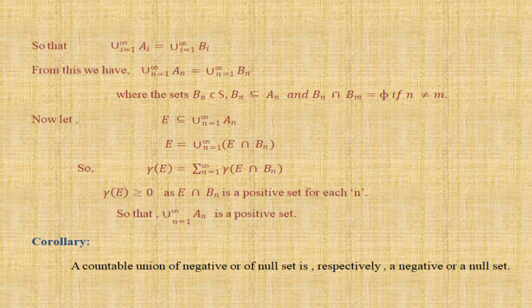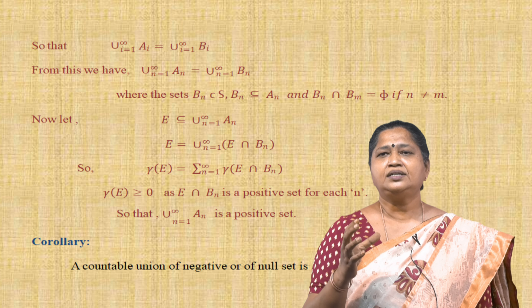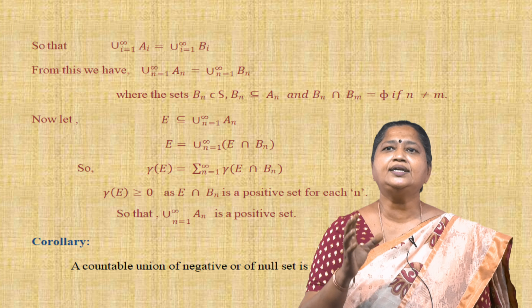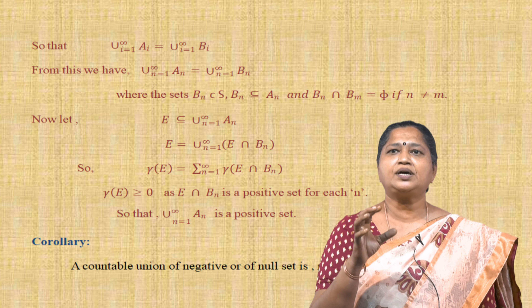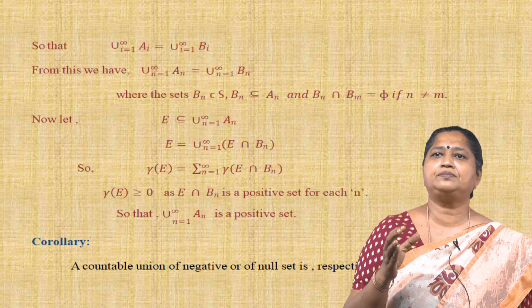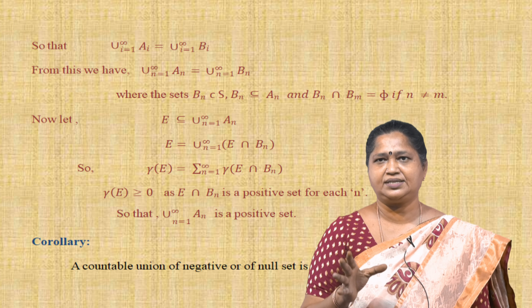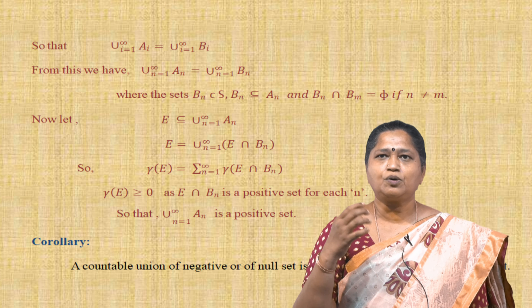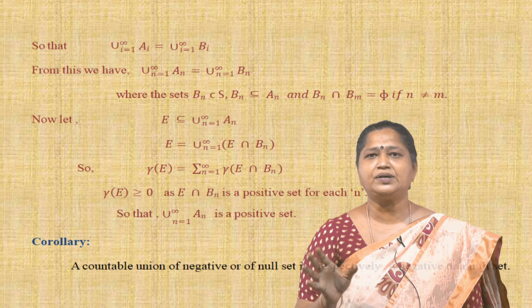ν(E) ≥ 0 because ν(E) = Σ_{n=1}^{∞} ν(E ∩ B_n) and E ∩ B_n is a positive set for each n, so the negative terms are omitted and only positive terms remain. Thus Σ_{n=1}^{∞} ν(E ∩ B_n) is non-negative, and the whole union ∪_{n=1}^{∞} A_n is a positive set.